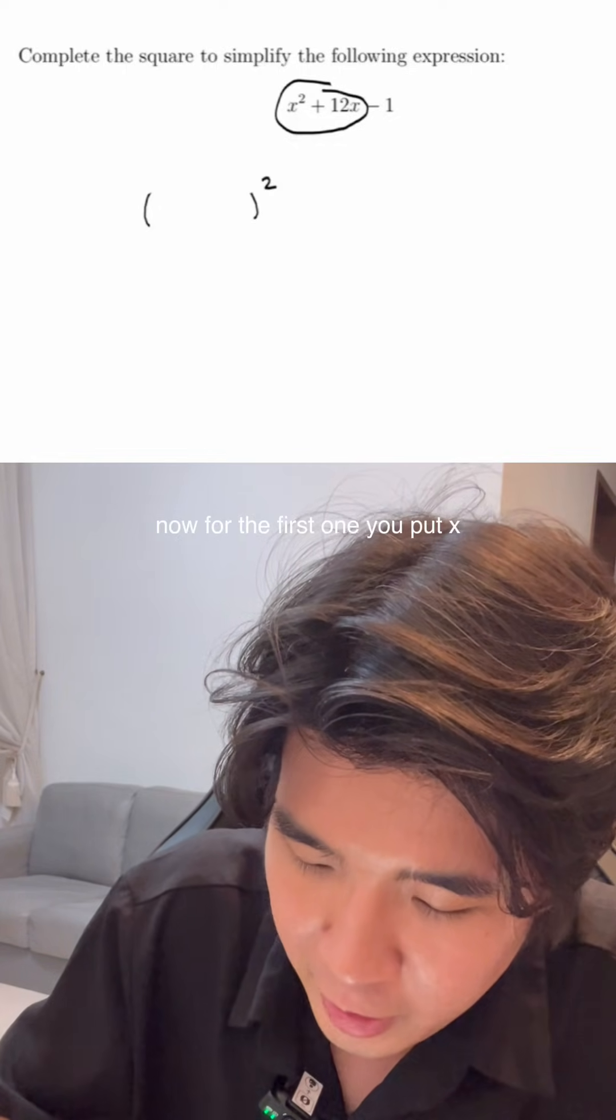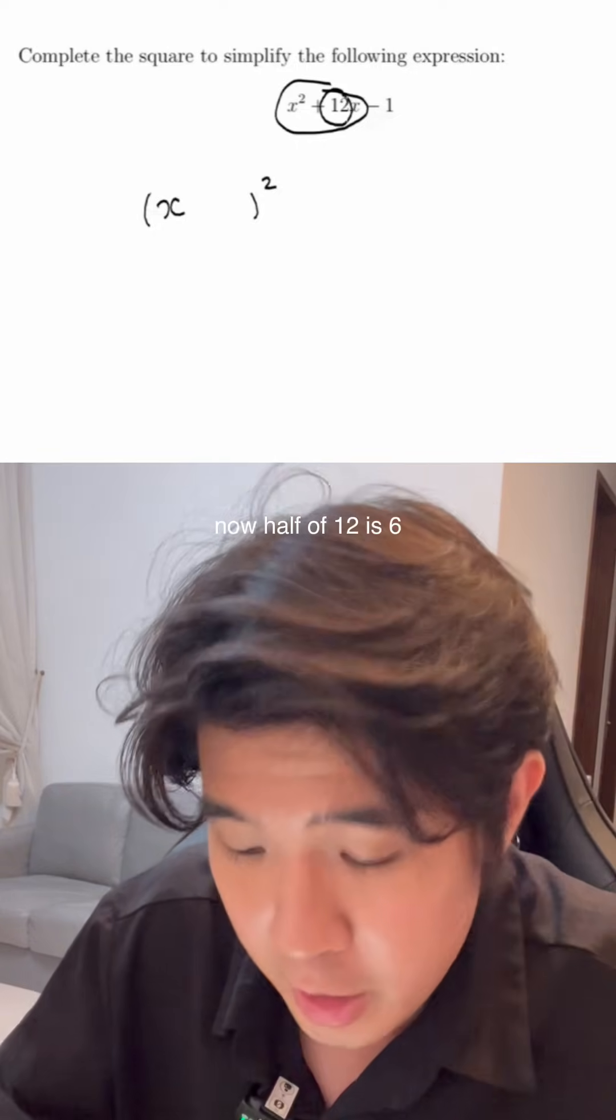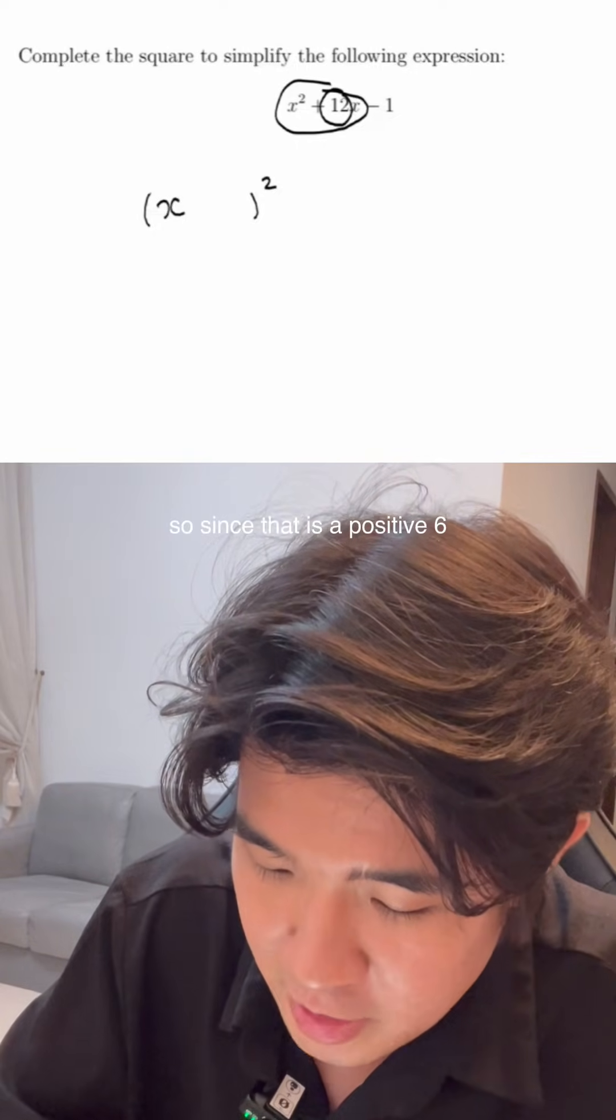For the first one, you put x. And then we follow by half of 12. Half of 12 is 6, so since that is a positive 6, you put it as plus 6.